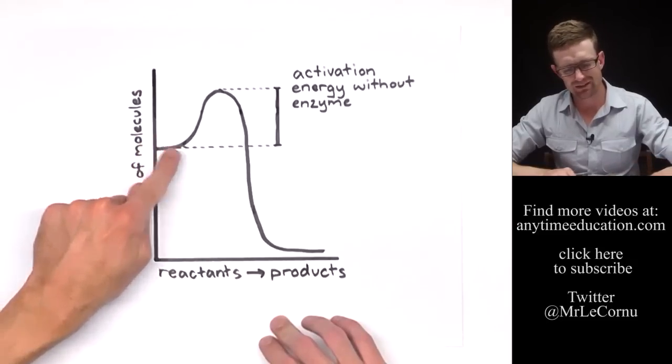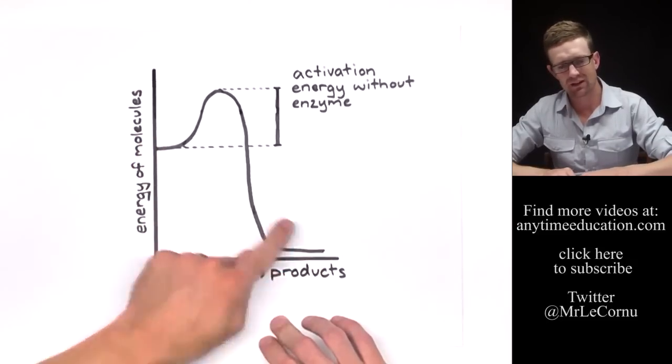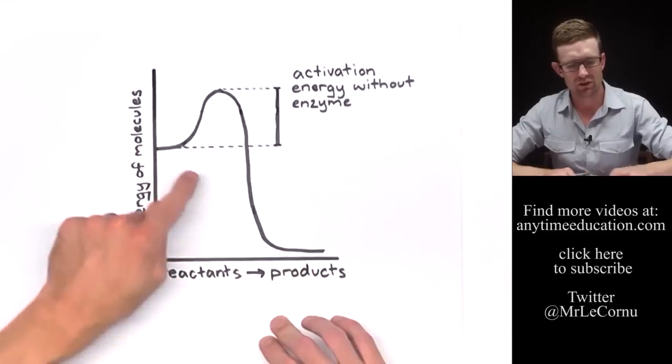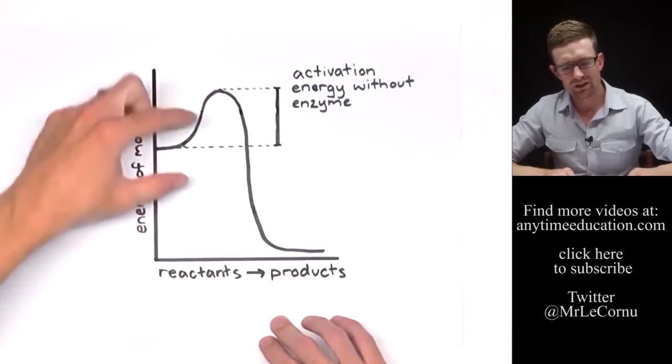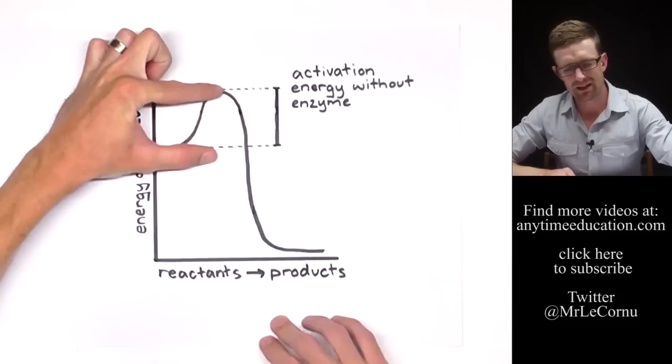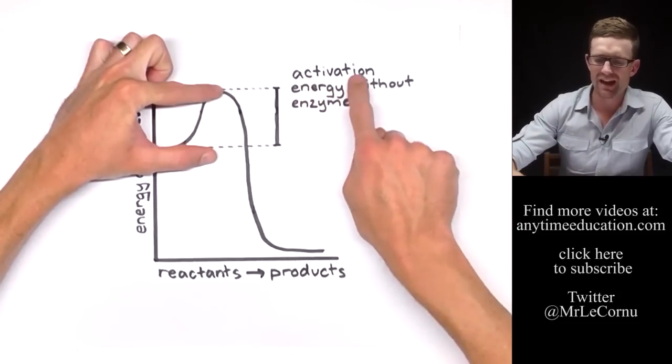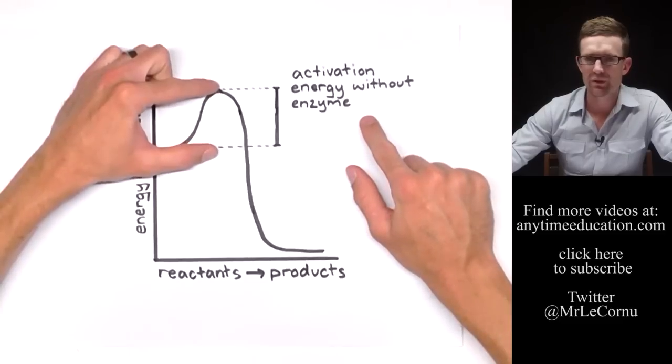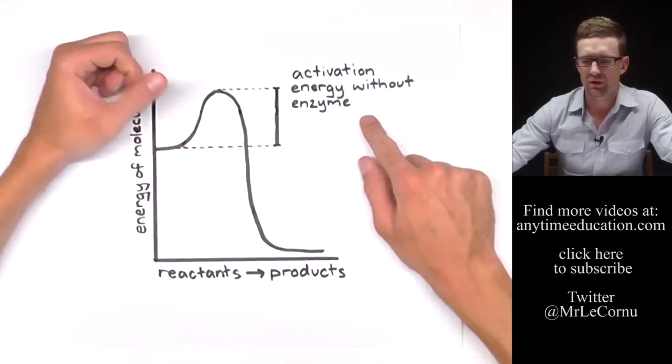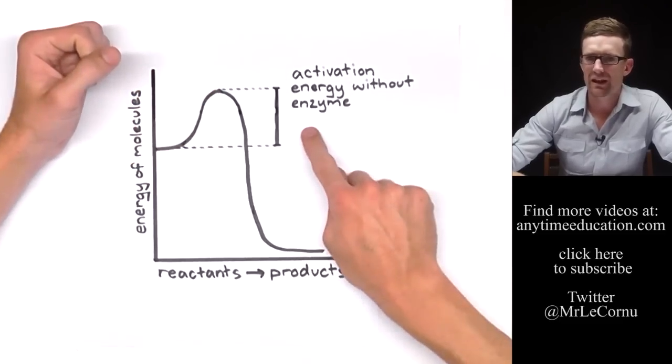To get from our reactants to our products and carry out a chemical reaction, we need an initial input of energy. That's this amount here, and we call that the activation energy. This is the amount of activation energy that we will need for this reaction without an enzyme.